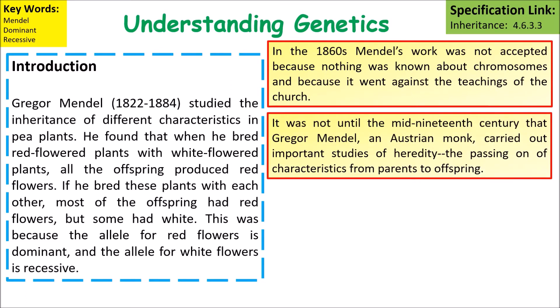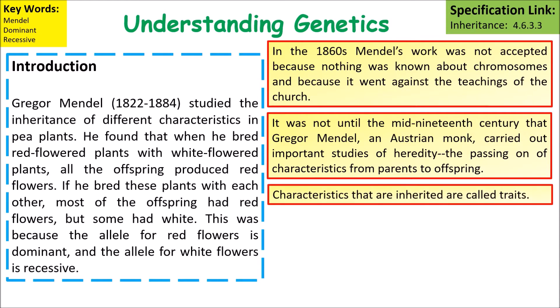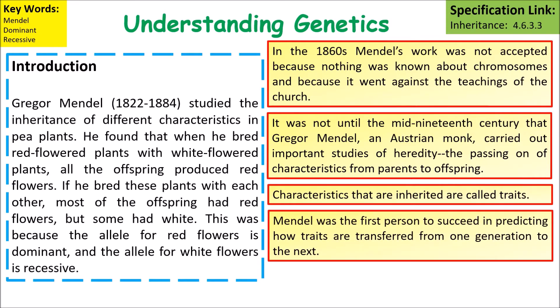It was not until the mid-19th century that Gregor Mendel, an Austrian monk, carried out these important studies into hereditary and passing on characteristics. We know that characteristics are inherited traits and Mendel was the first person to succeed in predicting how these traits are transferred from one generation to the next.